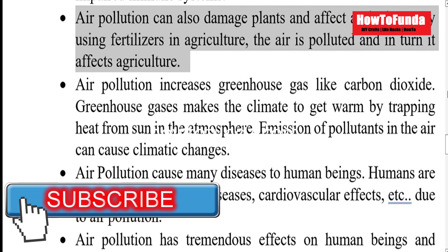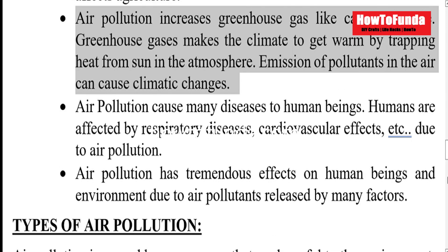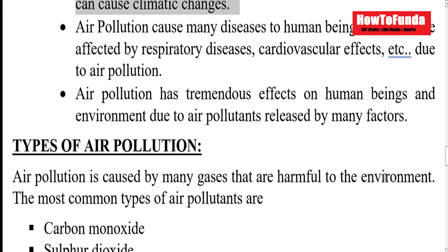Whenever we use more fertilizers in agriculture, the air gets polluted, which in turn affects agriculture itself. When agriculture is impacted, future growth of agricultural spaces will also reduce, meaning we cannot grow more crops in the future. Air pollution also increases greenhouse gases like carbon dioxide. Greenhouse gases warm the climate by trapping heat from the sun in the atmosphere, and emission of pollutants in the air can cause climate change as well.